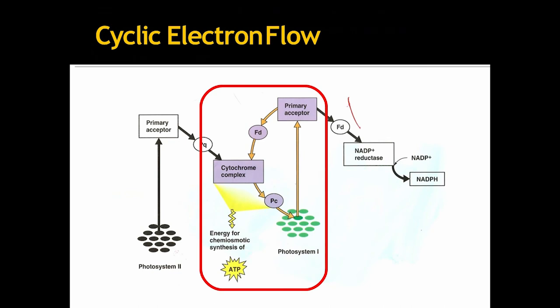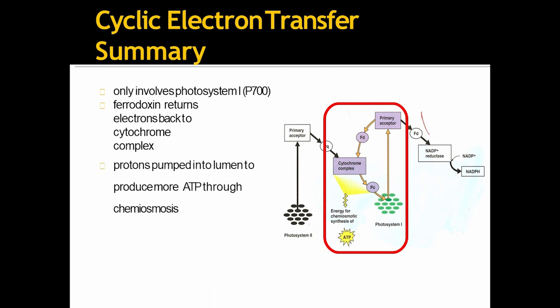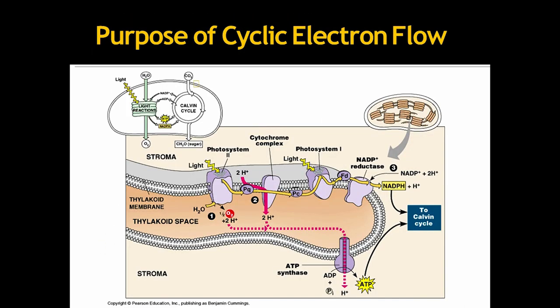Now, this is the diagram of cyclic electron flow. It happens inside the Z scheme. Look carefully. So, it involves only photosystem I that means P700. Ferredoxin returns electrons back to cytochrome complex. Protons pumped into lumen to produce more ATP through chemiosmosis. No NADPH is produced.